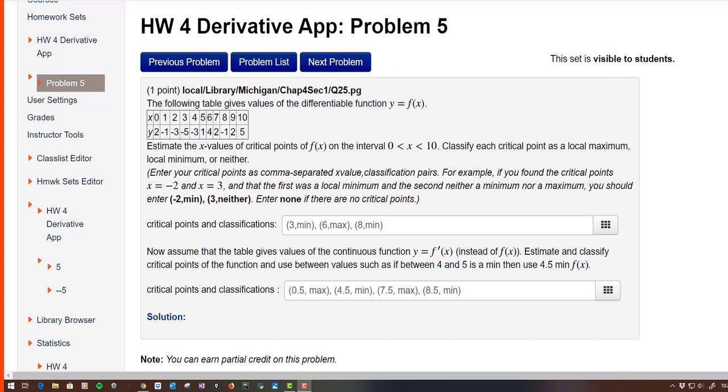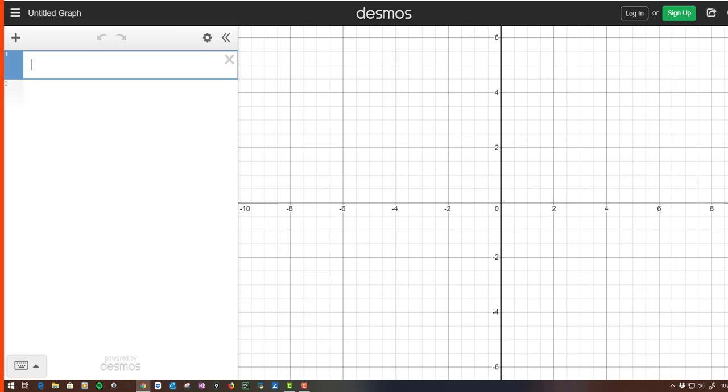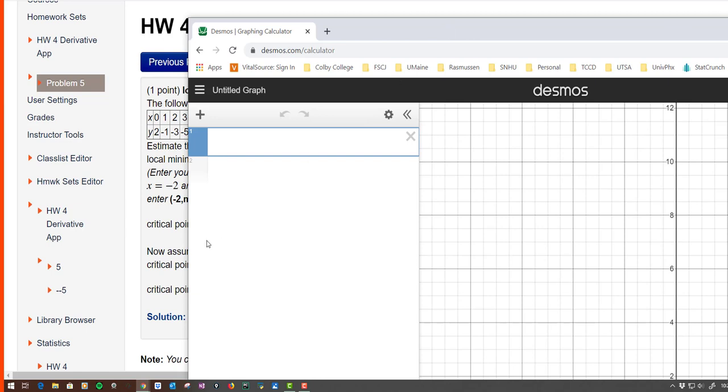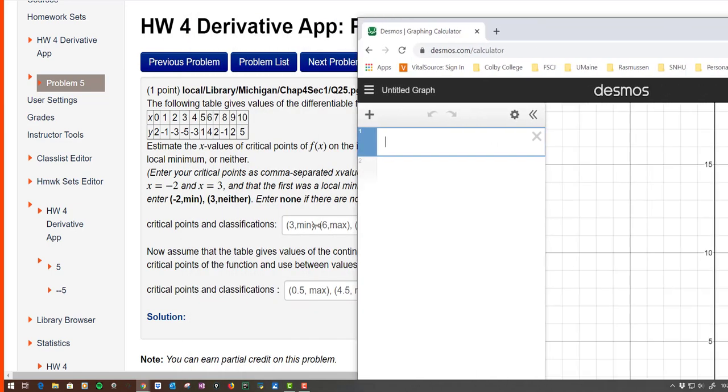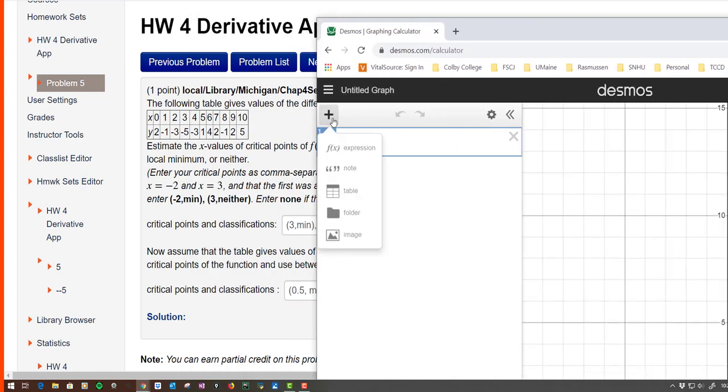Now one thing you could do very quickly, and you don't have to, but this is something you could do - you could go to a website like Desmos and you could actually enter in, notice a table here.